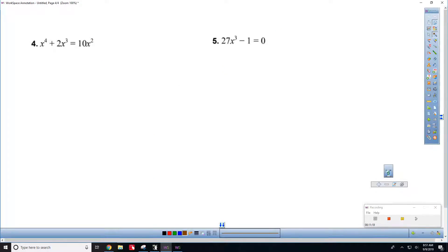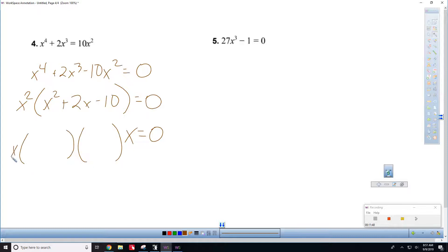So, all right. Number 4. X to the 4th minus, so plus 2x cubed minus 10x squared equals 0. Factor an x squared out. So, x could equal 0. Factor this. Two numbers that multiply to be negative 10 and add to be 2. Uh-oh. Not factorable. Okay.